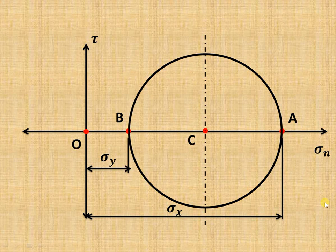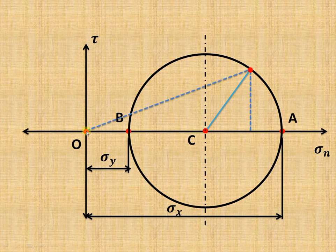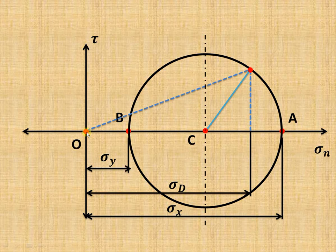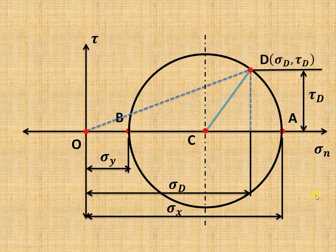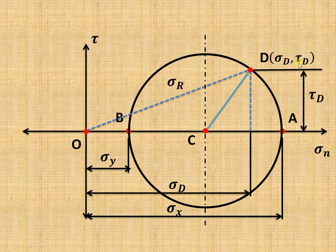Now suppose we want to find the stresses on a plane inclined at angle theta within the material. From CA, mark a point such that the included angle is 2 theta, then drop a projection onto the X axis and join that projection point to the origin O — this gives us point D. The horizontal length from O to that projection is the normal stress Sigma D. Measure this length and multiply by the scale to get Sigma D. Similarly, measure the vertical length and multiply by scale to get Tau D, the shear stress at point D.